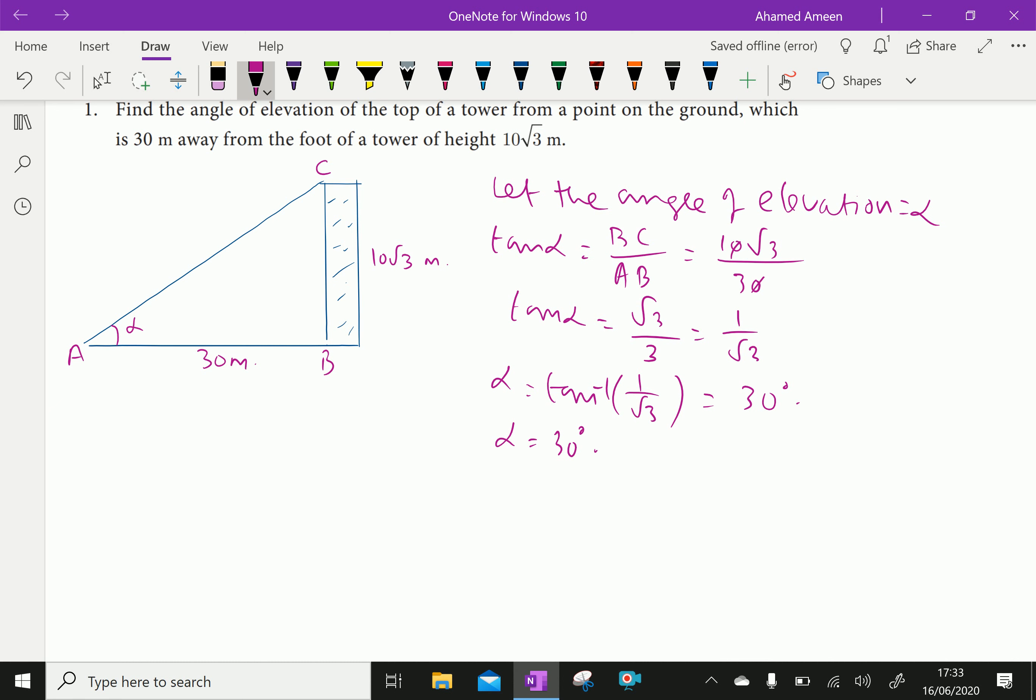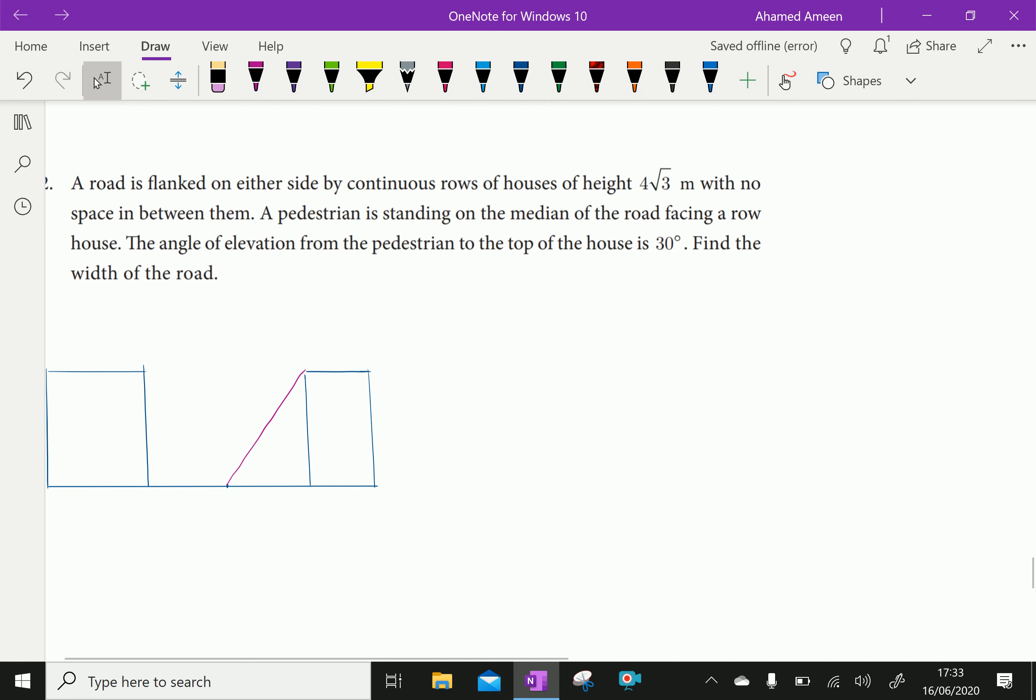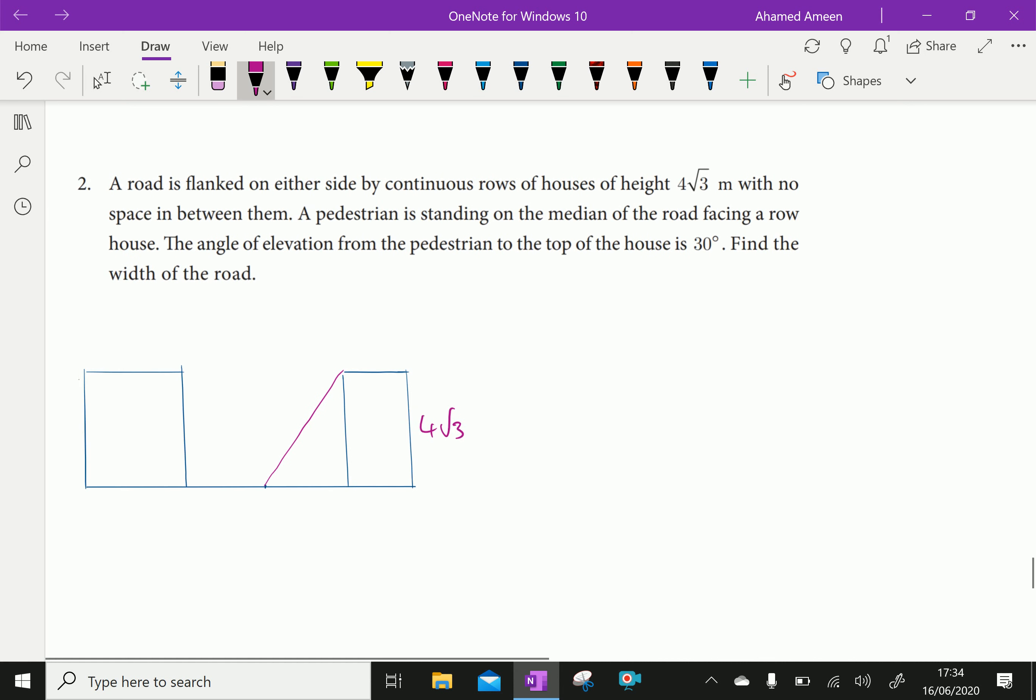Now, next question, a road is flanked on either side by continuous rows of houses of height. This is also 10 root 3. The height of the houses are 10 root 3 meter.